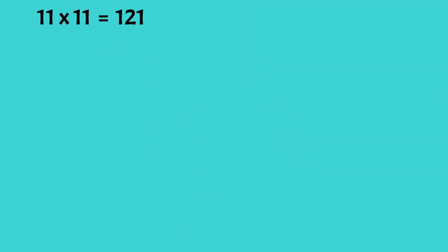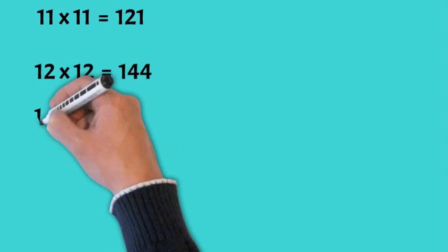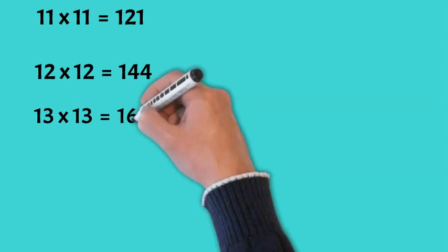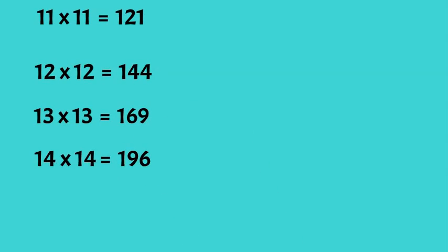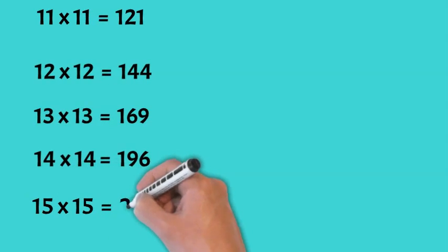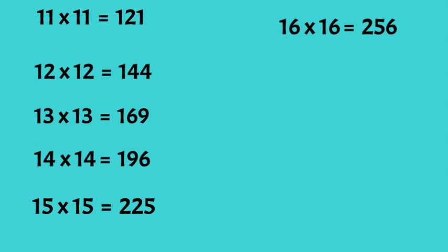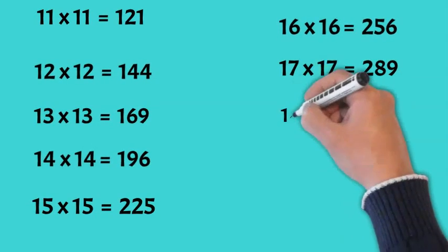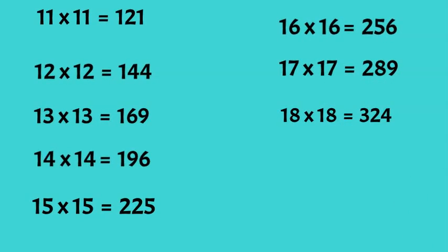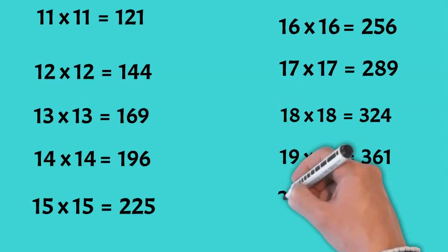Next one is the same number multiplied by itself: 11 x 11 is 121. 12 x 12 is 144. 13 x 13 is 169. 14 x 14 is 196. 15 x 15 is 225. 16 x 16 is 256. 17 x 17 is 289. 18 x 18 is 324. 19 x 19 is 361. And the last one: 20 x 20 is 400.